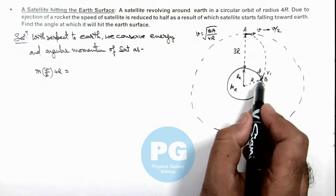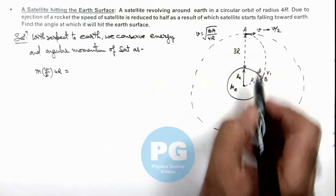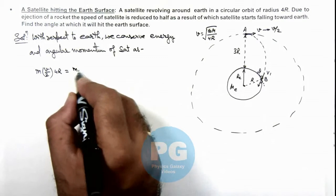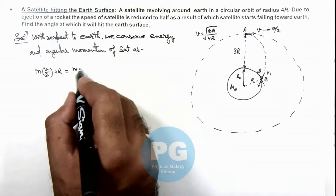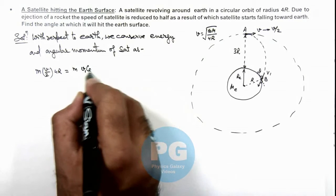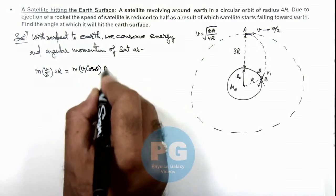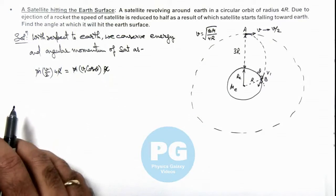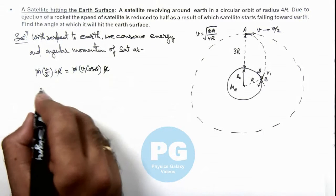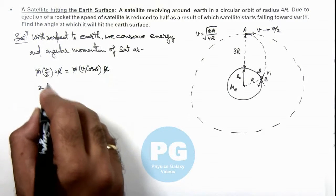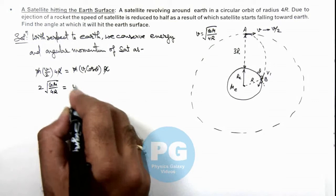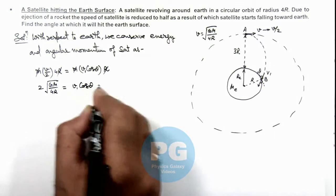This is equal to the angular momentum at point B. At point B, I can write m × v1 cos θ × R. Here, m and R get cancelled out, and the relation I am getting is 2 × √(GME/4R) = v1 cos θ. This is our equation 1.